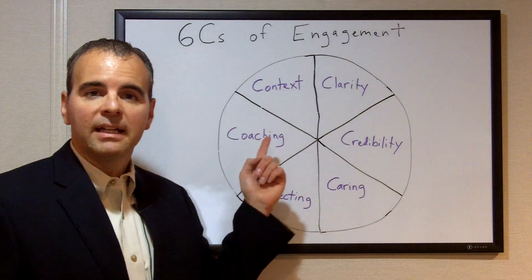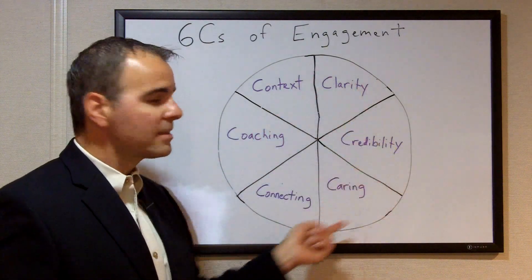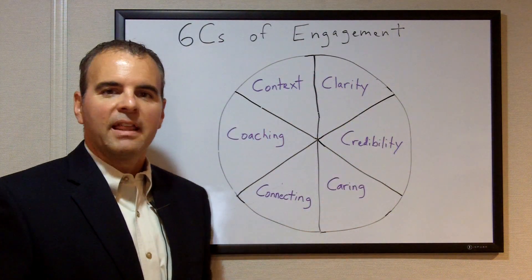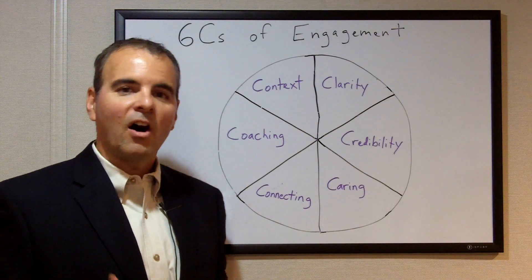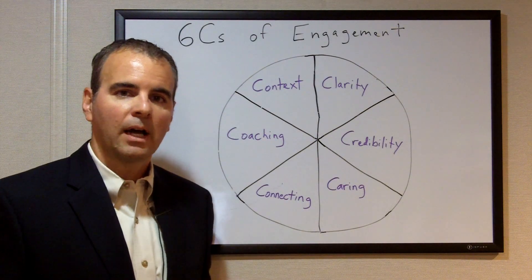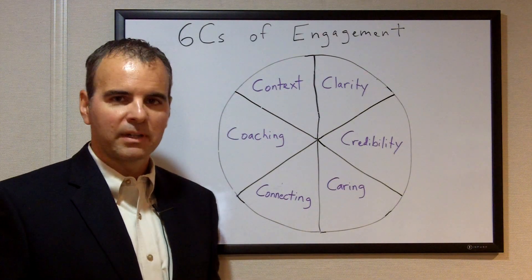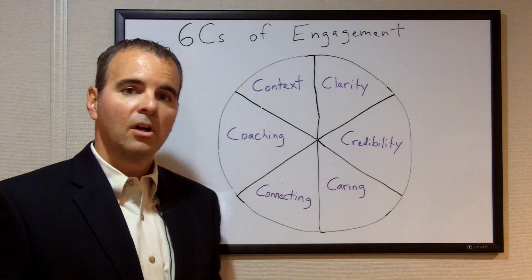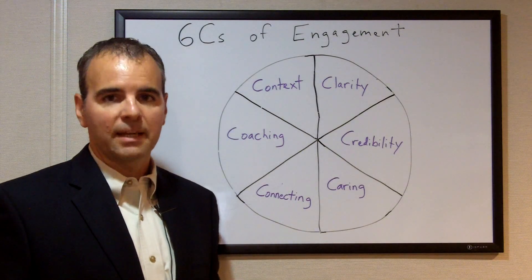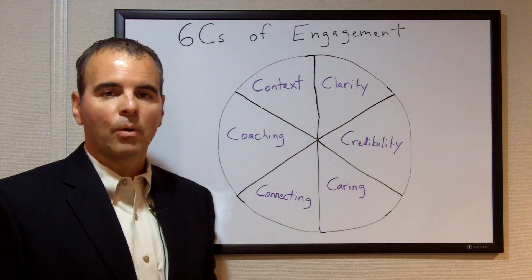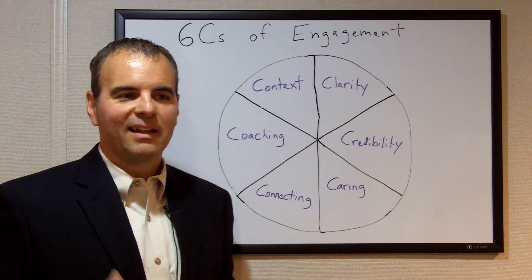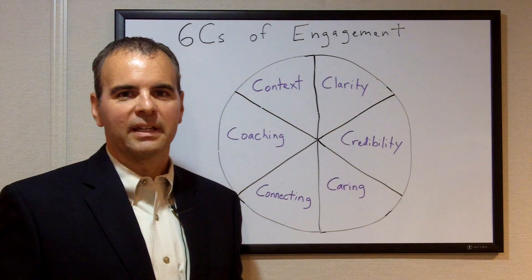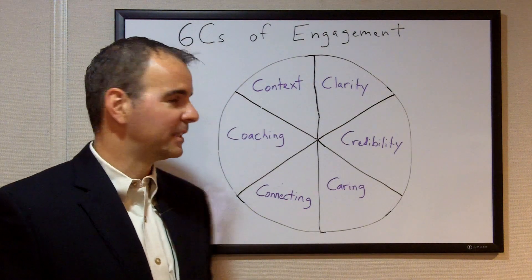Number one: in this pie chart, all six of the six C's are the same size. That's to represent that all six are equally important. I don't think we can really be effective if we only place a priority on one or two, or if we skip one or two of these six C's. We're going to find our leadership is lacking and that people don't find us all that worthy of being followed as a leader.